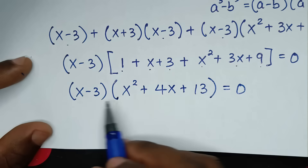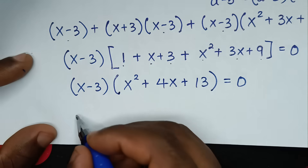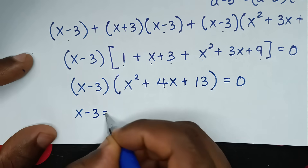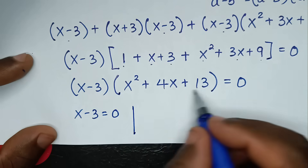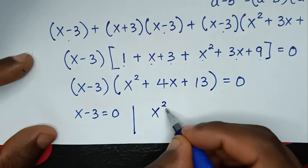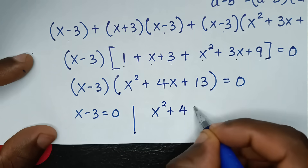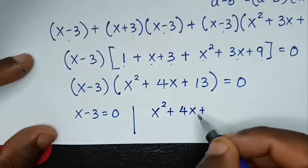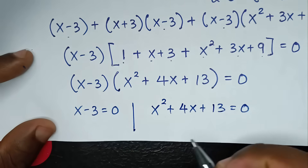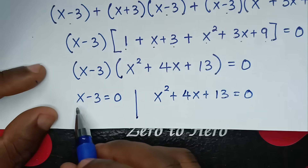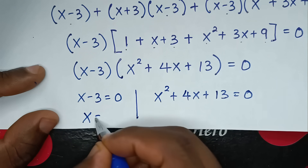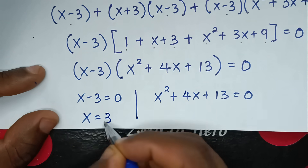Then we will have two solutions: x minus 3 is equal to 0, and x squared plus 4x plus 13 is equal to 0. From x minus 3 equals 0, taking negative 3 to this side, so it will be x is equal to 3.